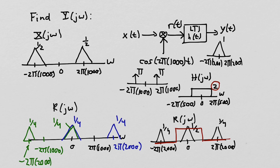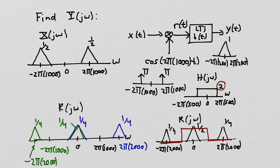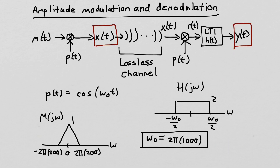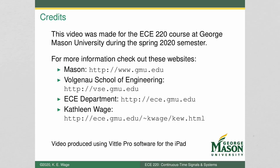What we got for y of j omega is exactly equal to the original m of j omega. So if we take our message signal m of t and run it through the whole system, y of t ends up exactly equal to m of t. This simple modulation and demodulation system is what's used in AM radio — something very similar to what you'll learn more about in ECE 460. I hope you found this to be a useful example. This was made for the ECE 220 course — thanks for watching.